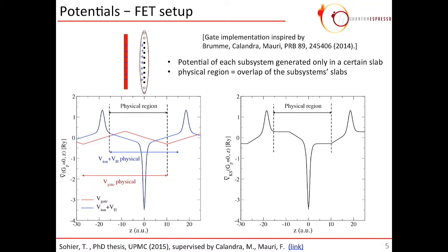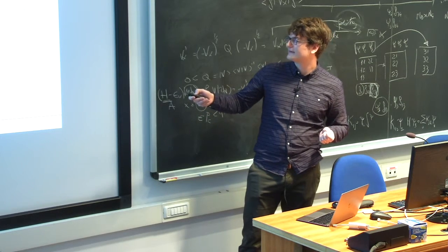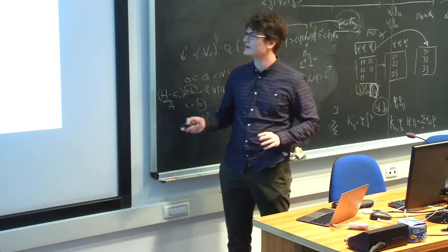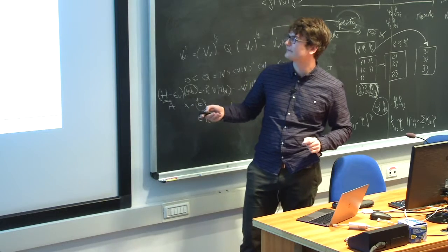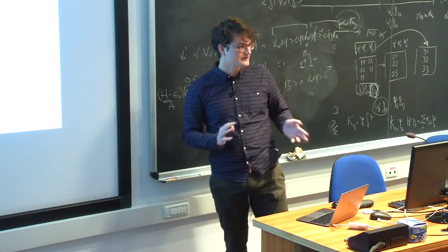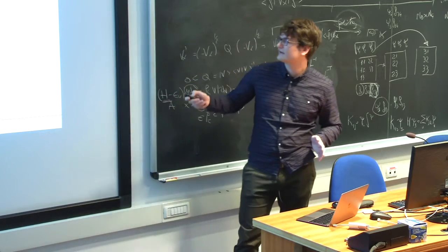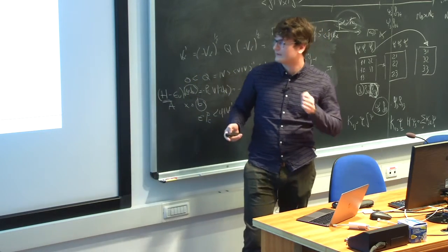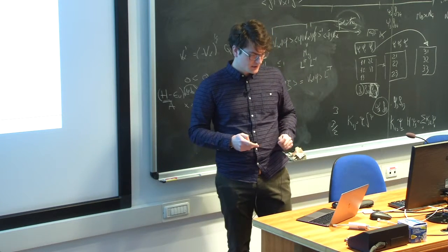In the overlap of those red and blue regions here, we define a physical region where all the potential generated by all the subsystems makes sense. And in this physical region, if we look at the sum of the potential, indeed, we recover what we wanted with this asymmetric configuration in terms of field effect. Outside the physical region, you see that there are some weird variations of the potential, but that's okay as long as the 2D material and the electrons stay in the physical region.